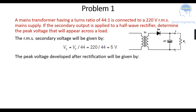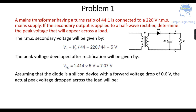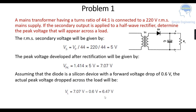Next, the peak voltage developed after rectification is given by Vpk, which is equal to 1.414 multiplied by the secondary voltage Vs, which is 5 volt. So you will be getting a peak voltage of 7.07 volt. Assuming that the diode is a silicon device with a forward voltage drop of 0.6 volt, the actual peak voltage across the load resistance RL is VL = 7.07 volt minus 0.6 volt, giving 6.47 volt.